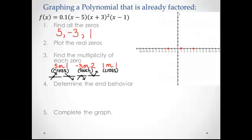So then we can go ahead and determine the end behavior. To determine the end behavior, we're going to look at the leading coefficient and the degree of the polynomial. This is actually a little bit more difficult to find if our polynomial is already factored completely. So at this point, what we're going to need to do is to multiply through, which means 0.1 times (x - 5) times (x + 3)² times (x - 1).